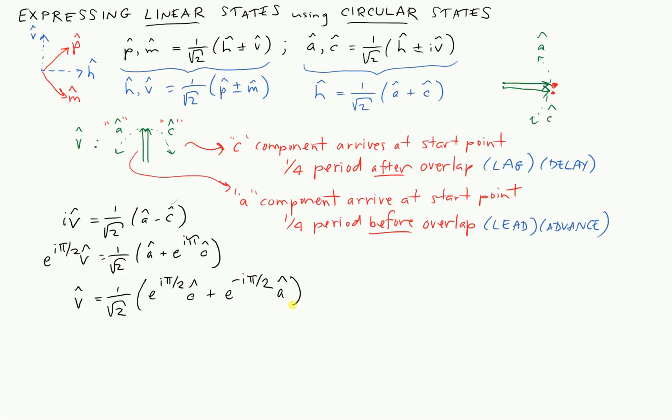So there's my expression. Remember, I said that the c component lags, and that's exactly what we saw in the previous video, that this multiplying by e to the i pi over two causes a lag of a quarter cycle, or a quarter period. And by the exact same math, if I see e to the minus i pi over two, that's a lead of a quarter period.